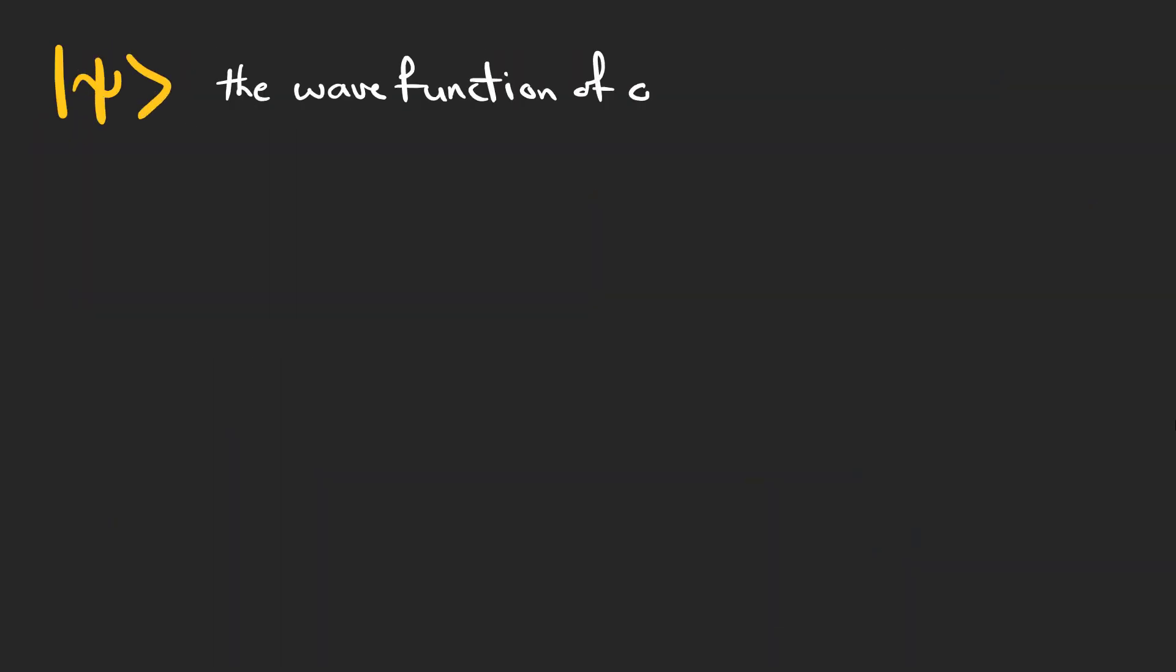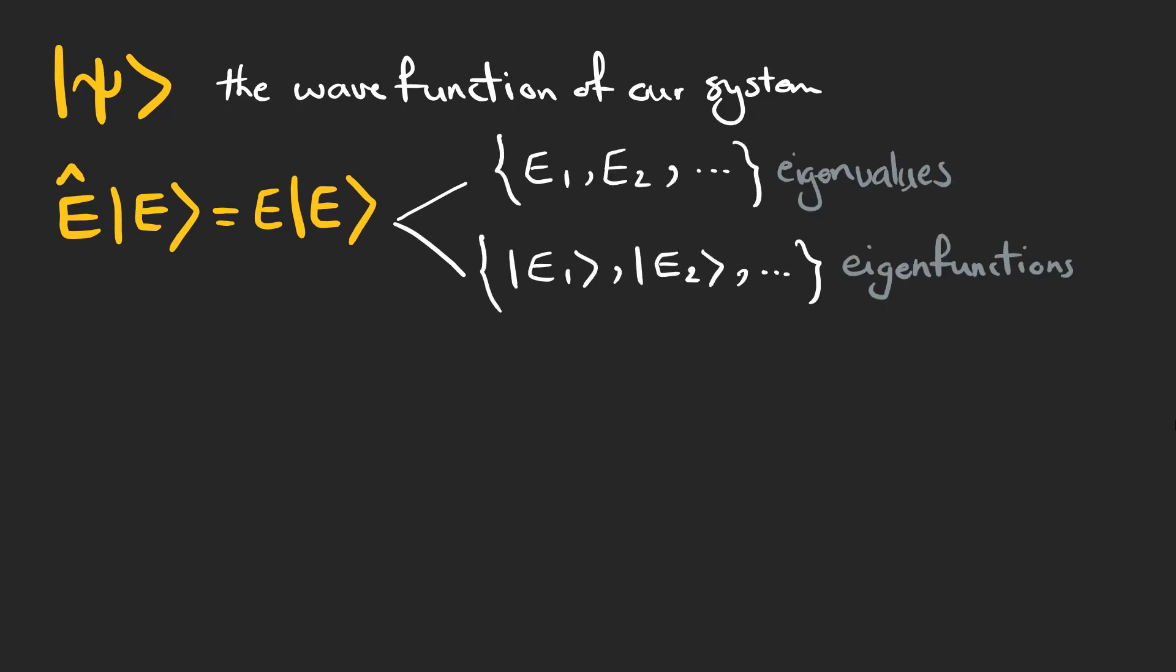As an example, suppose that we want to find different energies that a quantum system can be in. What we need to do is to calculate this equation, this eigenvalue equation, and find the possible eigenvalues and eigenfunctions.